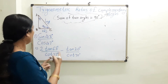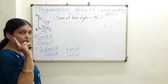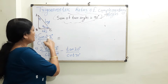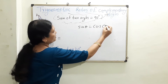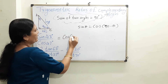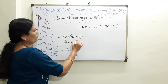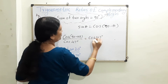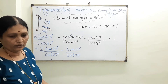Let us take some examples. We have sin 43 over cos 47. Observe that 43 and 47 are complements of each other, and sin and cos are complements of each other. Using sin θ = cos(90 − θ), I write sin 43 as cos(90 − 43) = cos 47. So the expression becomes cos 47 over cos 47, which equals 1.